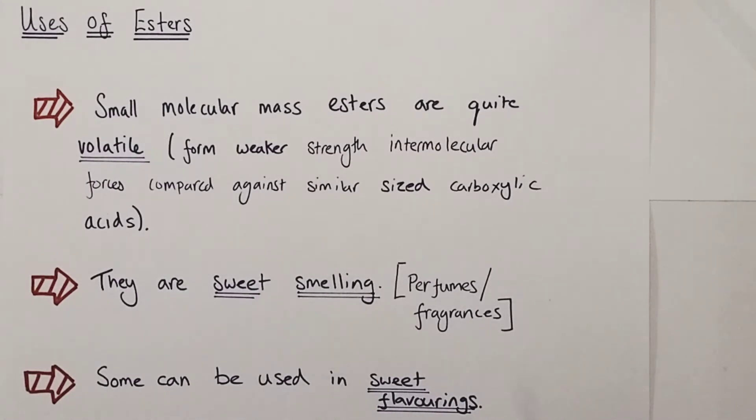Small molecular mass esters, small members of the family, are quite volatile. That means they evaporate relatively easily because they form weaker strength relative intermolecular forces when compared against similar sized carboxylic acid molecules. They don't form the hydrogen bonds that carboxylic acid molecules are able to form between their molecules.